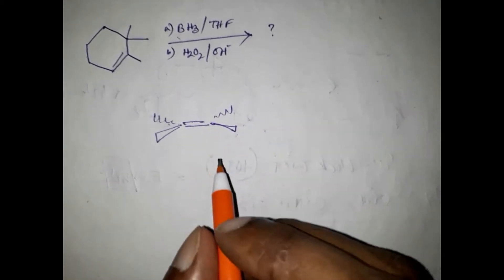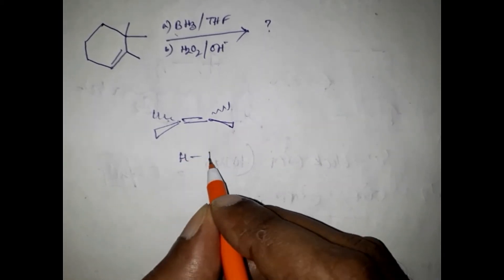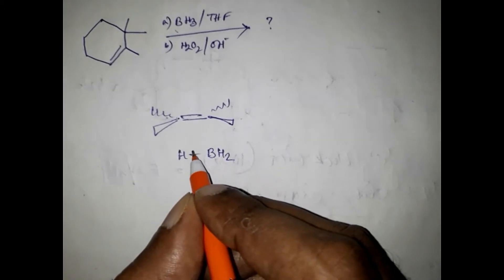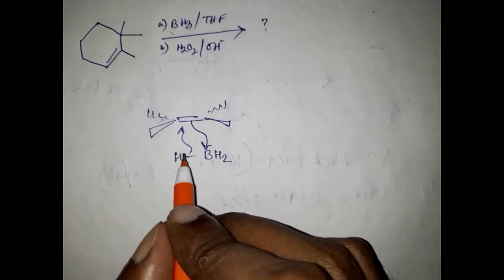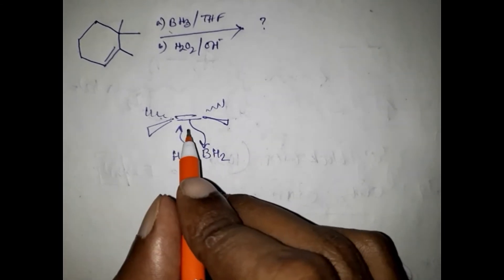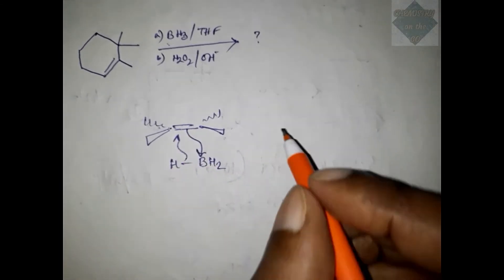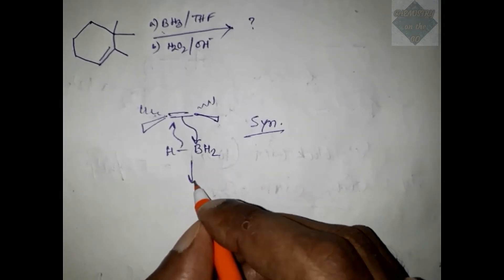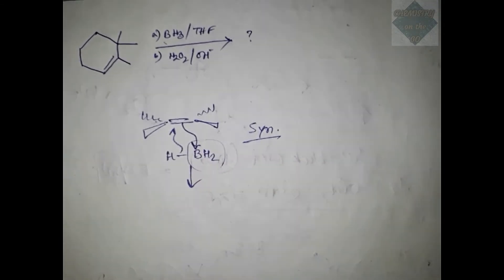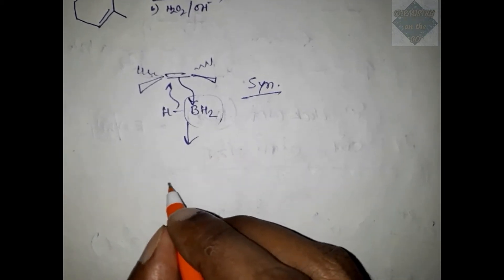BH3 is getting added in this manner—it's added here and here. You can see that BH3 is adding from the similar side. This is a syn addition. After that, when this BH2 group is converted into an OH group, the structure will be somewhat like this.